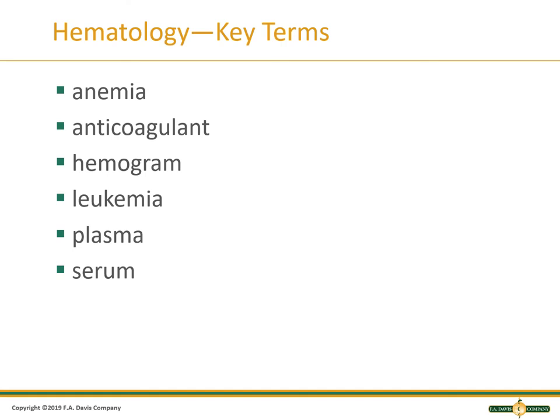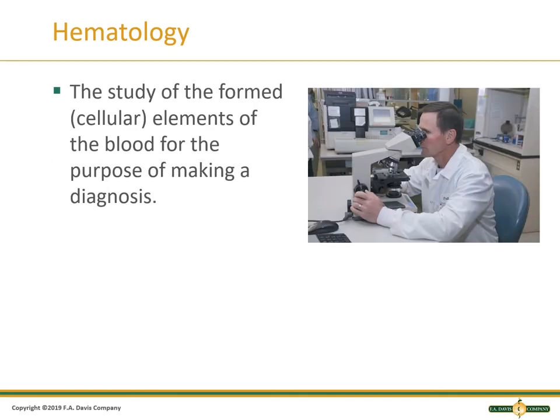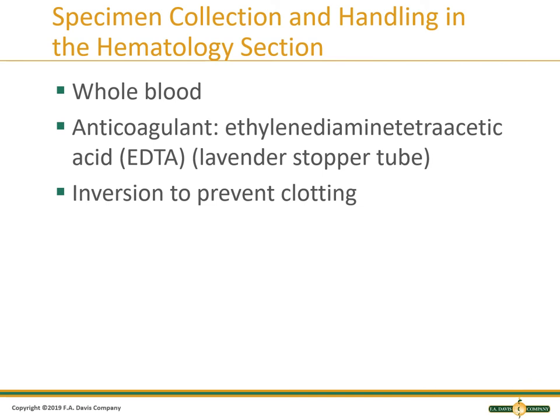Hematology is a department that does testing that can detect conditions such as anemia and leukemia. Hematology is the study of the formed elements of the blood for the purpose of making a diagnosis. The formed elements are red blood cells, white blood cells, and platelets. The most common test performed in hematology is the complete blood count, or CBC, which contains many different tests and indices. The specimen required is whole blood anticoagulated with EDTA, using the purple or lavender stopper tube, which must be inverted eight times to prevent clotting. Even microclots will invalidate results and can clog the instrument, causing downtime.